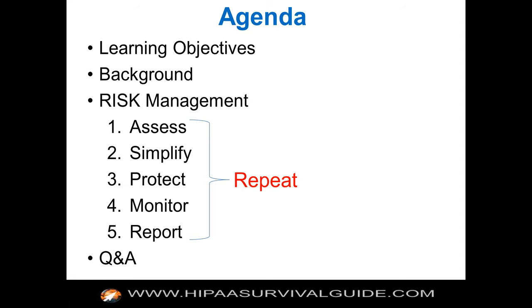Today's agenda: we're going to review the learning objectives, a little bit of background, and then discuss risk management. Risk management is one of the implementation specifications of the security rule, but in essence it really swallows the rule and probably swallows the rest of the rules as well, because it really requires you to develop a risk management program. From our perspective and our methodology, a risk management program has five basic steps.